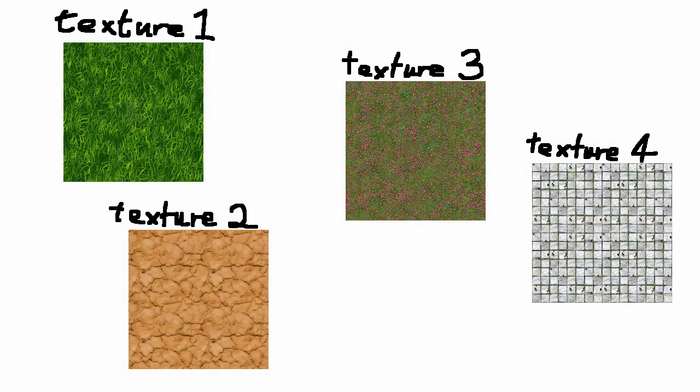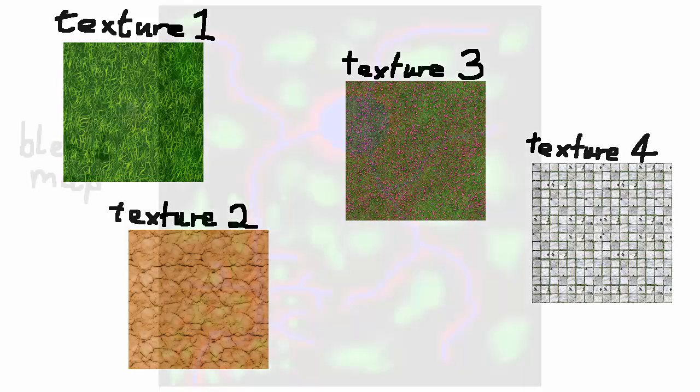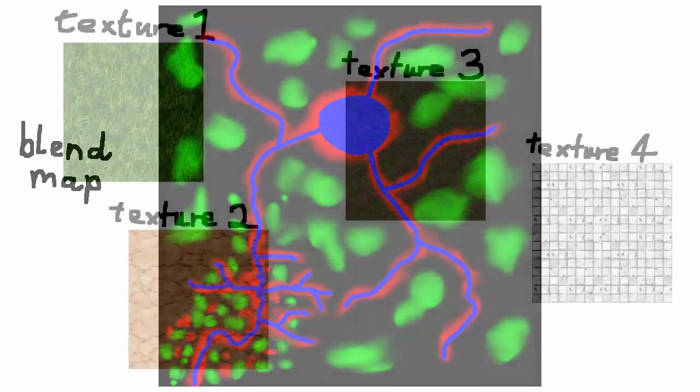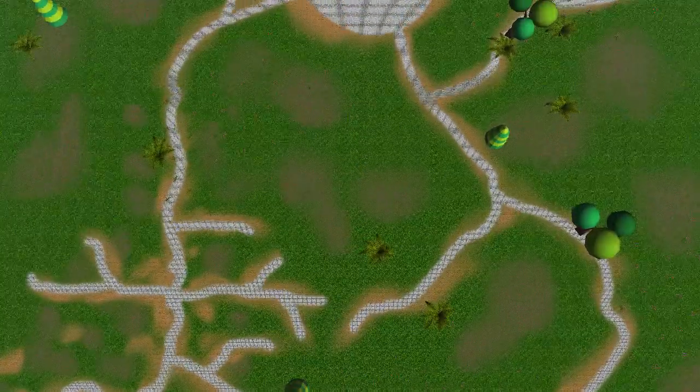We have our four textures, but how do we tell OpenGL where to render each one? To do this we use one more texture called a blend map. This blend map represents one terrain, and the colours represent the different textures. In this example the black or lack of colour represents the grass texture, red represents the dirt texture, green represents the pink flowers texture, and blue represents the pathway texture. For each terrain we can create a blend map, paint on where we want the textures to be rendered, and in the shaders we reference the blend map to know where we should be rendering each terrain texture.